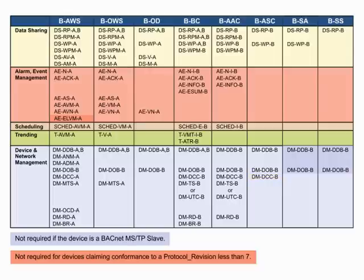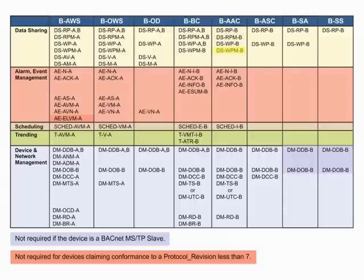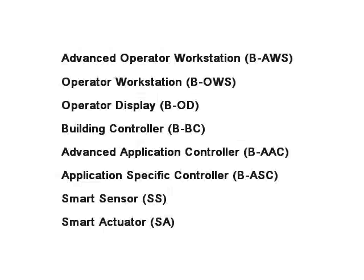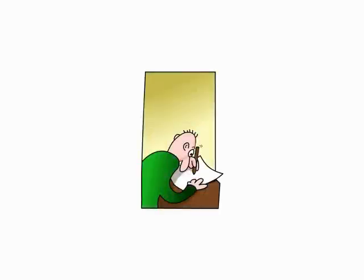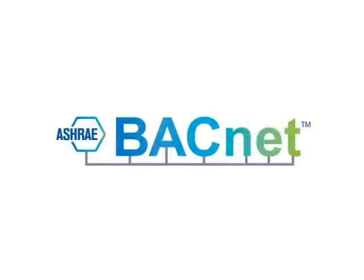However, there is no requirement for the B-ASC to support alarming, scheduling, or trending. The Advanced Application Controller provides additional functionality over the B-ASC by providing read property multiple and write property multiple. A device profile is a short way to classify a device, but it only defines a minimal set of BIBs. If you want to learn all the BIBs a device has, you study its Protocol Implementation Conformance Statement, or PICS. We will learn about PICS in our next video in this series.